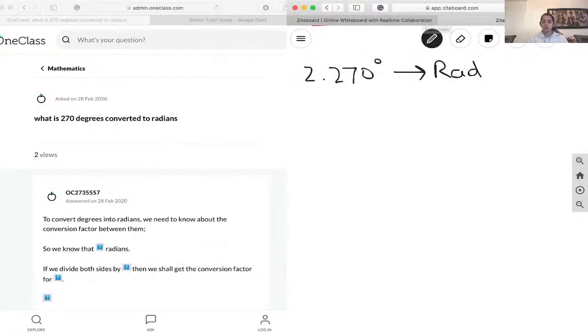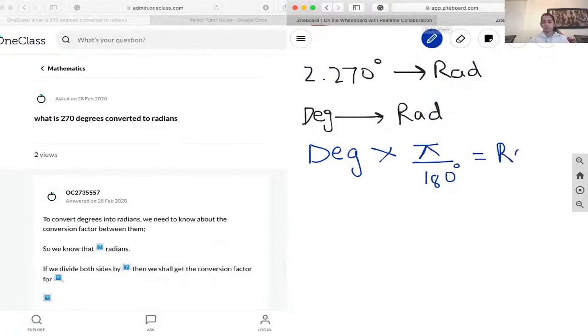So two formulas that we might be using when converting from degrees to radians or radians to degrees is this one. If you want to turn from degrees to radians, you take the degree and you times it by pi over 180 degrees, and then there you go, you get your radian.